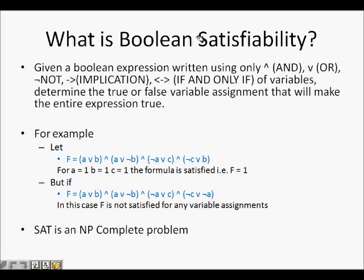What is the boolean satisfiability problem? You are given a boolean expression — boolean variables are variables which have values either 0 or 1. Given a boolean expression written using AND, OR, NOT, implication, and if-and-only-if of boolean variables, we have to determine if there is any assignment of those variables such that the formula is true, or it is satisfied.